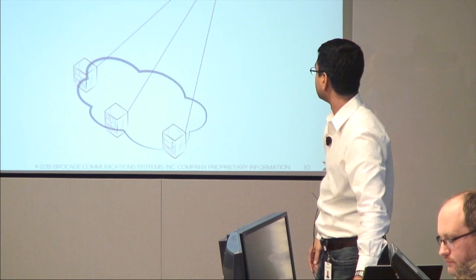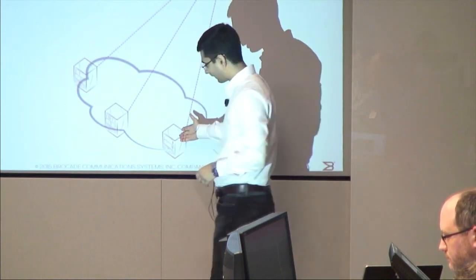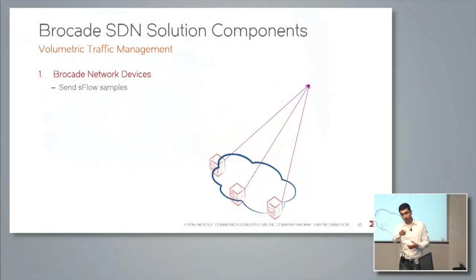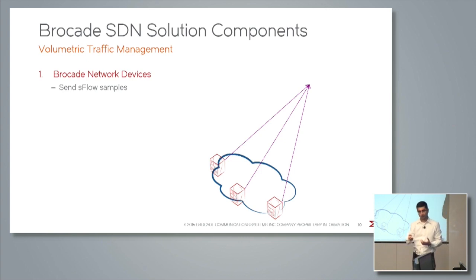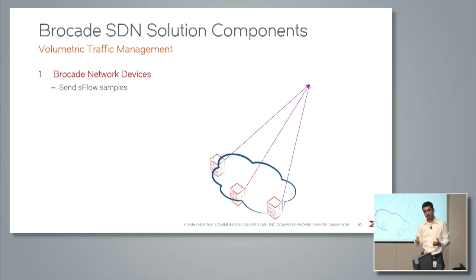I want to talk about how this solution works. First of all, you have Brocade data center network devices — for example, our MLX routing device as well as ICX, but not VDX currently, though VDX could be supported in the future. The device attributes required to work in this solution are: first, these devices should support OpenFlow 1.3 with a hybrid port — a hybrid port that works both as a normal forwarding port as well as an OpenFlow port. Second, these devices should be capable of sending SFlow samples.